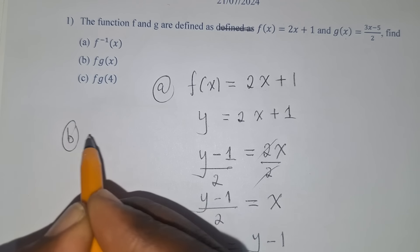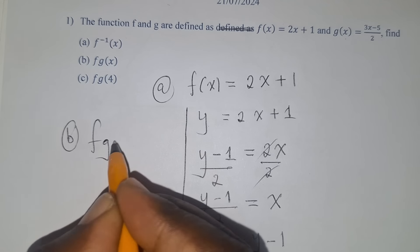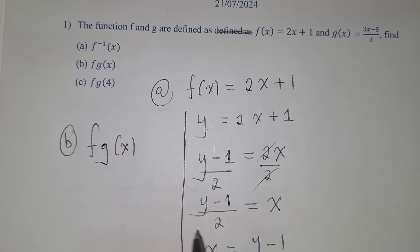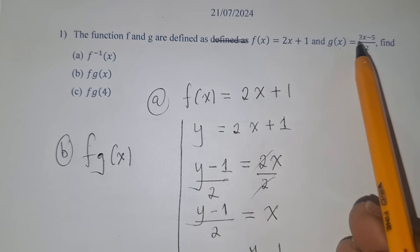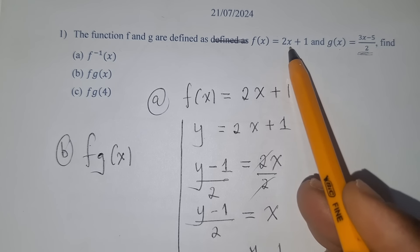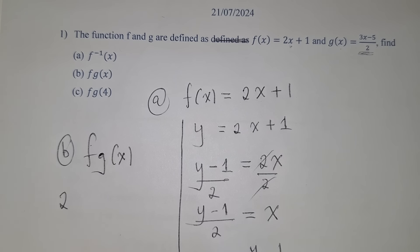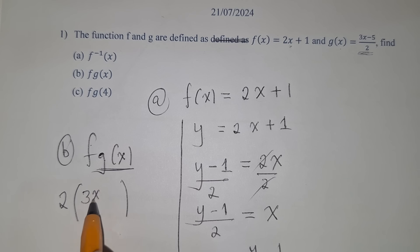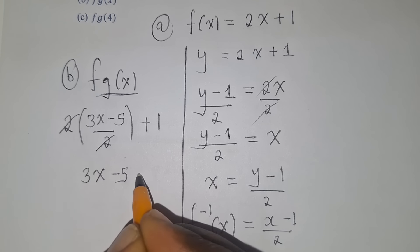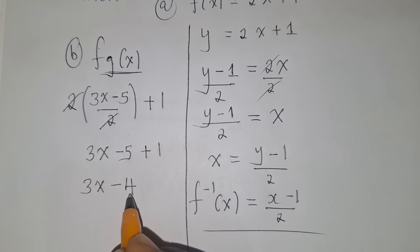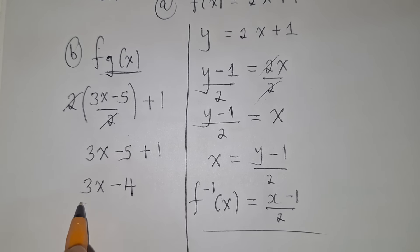For question b, find f of g of x. The f function swallows the g function: maintain the 2 and where there is x in f, write the g function — which is (3x − 5)/2 — then add 1. The 2s cancel, leaving 3x − 5 + 1, which simplifies to 3x − 4. This is our f(g(x)).